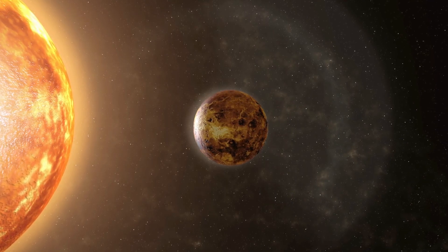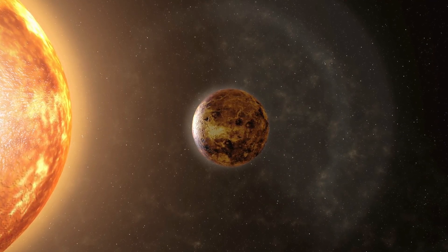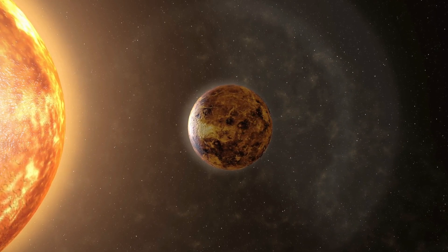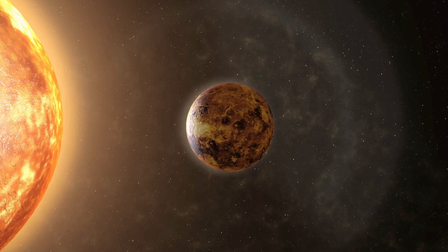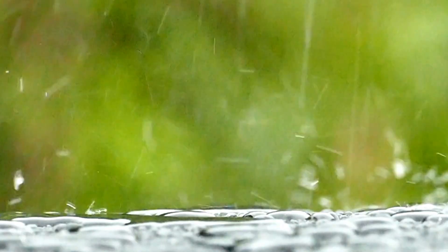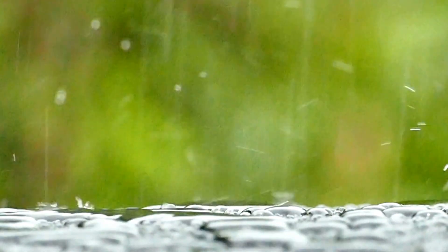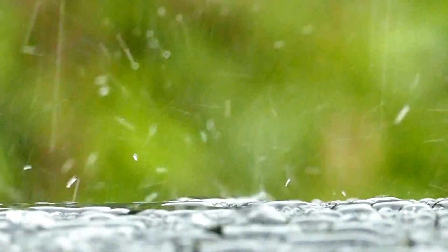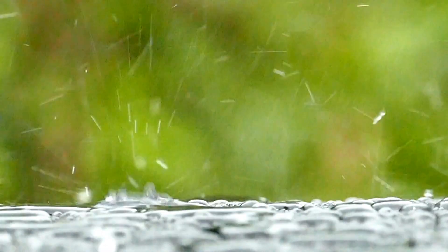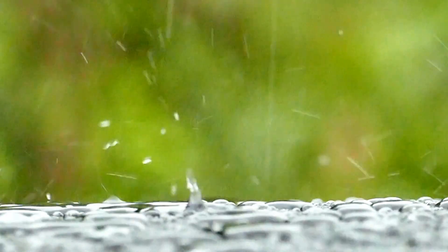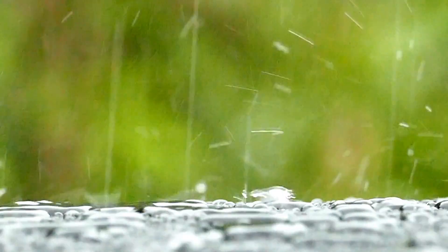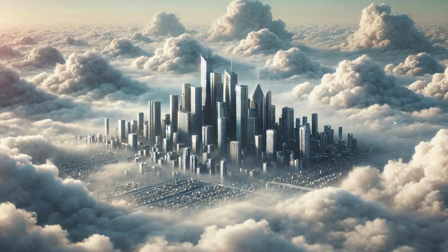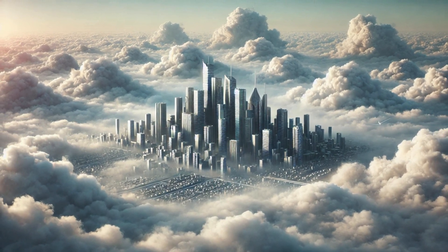But before you start packing your bags for Venus, there's a catch. Venus's atmosphere is mostly made up of carbon dioxide with clouds of sulfuric acid. Yep, acid rain. You thought Earth had bad weather? On Venus, it's literally raining acid from the sky. So while floating cities sound cool, we'd need to build them out of some seriously strong corrosion-resistant materials. Otherwise, we'd be living in constant fear of our floating city springing a leak and dropping us into the inferno below.